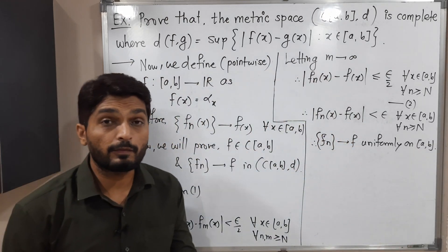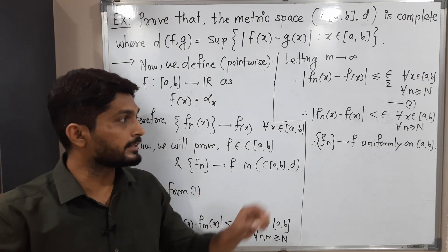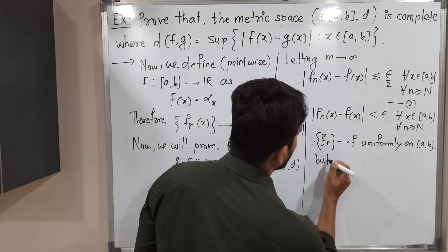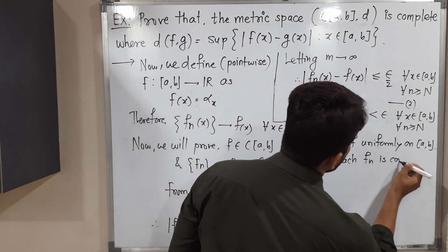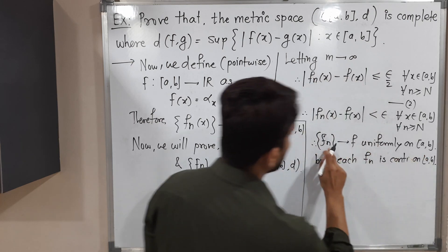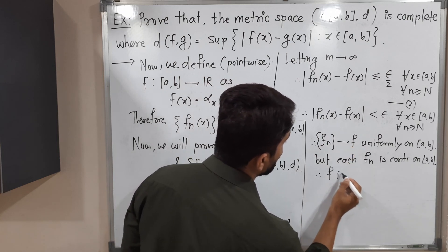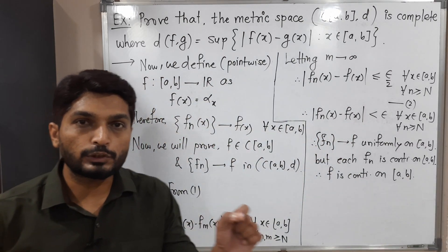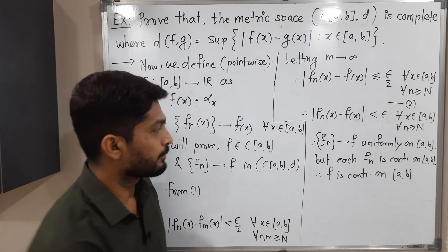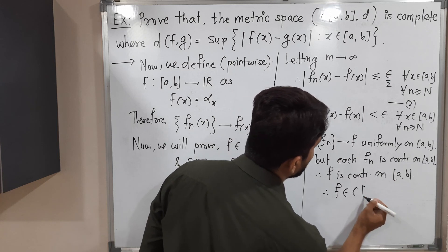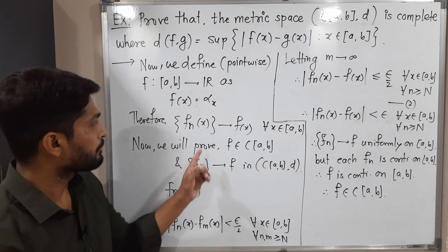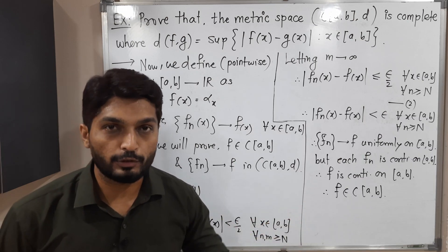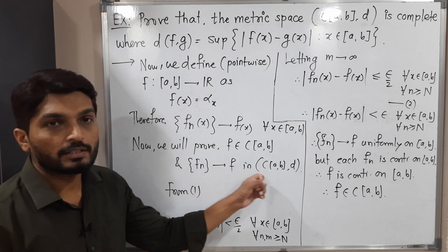In the theory of sequences of functions, this is the definition of a uniformly convergent sequence: f_n converges to f on [a,b]. Each f_n is continuous on the closed interval [a,b], and it converges to f uniformly. Therefore, f is also continuous on [a,b]. This is a standard result: if f_n converges to f uniformly and each f_n is continuous, then f is also continuous. So f belongs to C([a,b]).